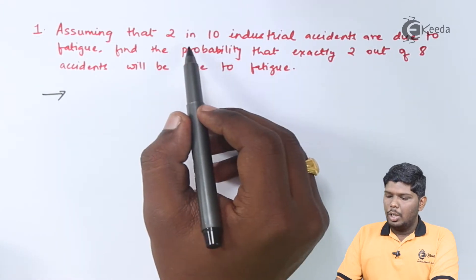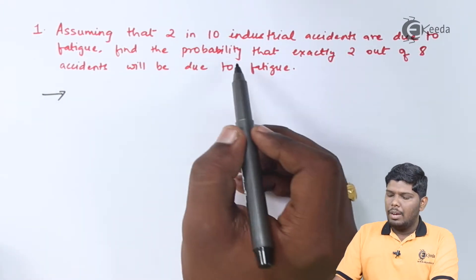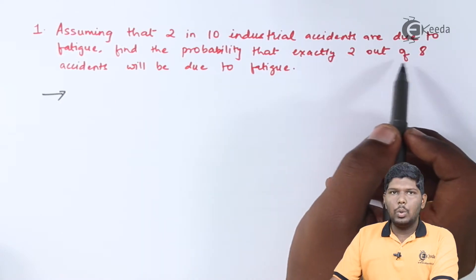Assuming that 2 in 10 industrial accidents are due to fatigue, find the probability that exactly 2 out of 8 accidents will be due to fatigue.